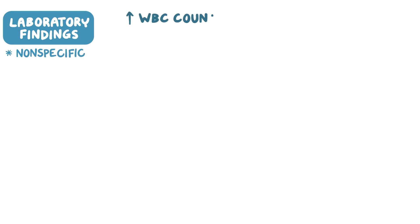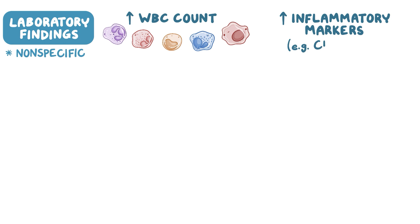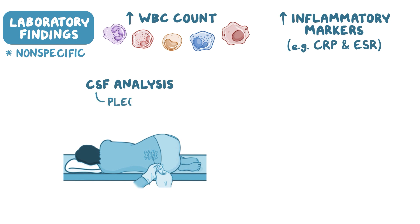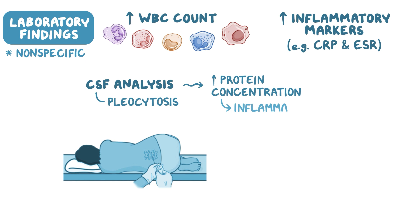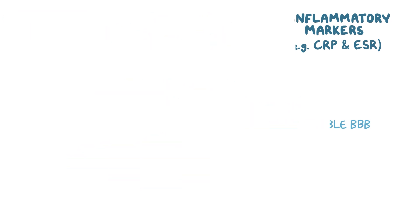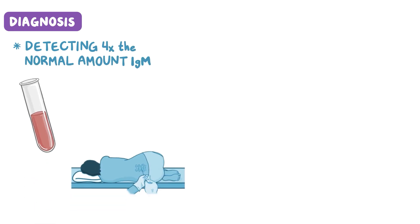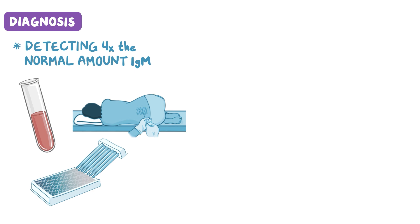Laboratory findings associated with West Nile virus are nonspecific and include an elevated white blood cell count or elevated inflammatory markers like CRP and ESR. Cerebral spinal fluid analysis, or CSF analysis, typically shows pleocytosis, which means an increased number of white blood cells. CSF analysis can also show an elevated protein concentration because the inflammation leads to a more permeable blood-brain barrier, or BBB, which is a selective semi-permeable barrier between the circulating blood and the central nervous system. The diagnosis of West Nile virus is made by detecting about four times the normal amount of IgM in the serum or CSF, using an immunoassay test that's specific to the virus.